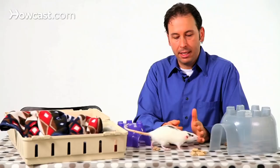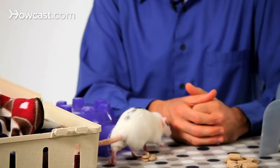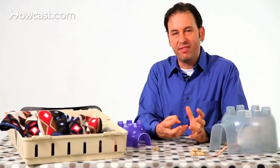Some rats also come in a Rex variety. These are the type that have curly whiskers and a more velvety type coat.